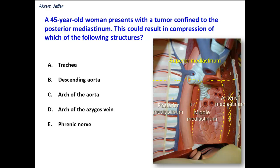These divisions are imaginary and they are for descriptive purposes. In other words, there are no septa or borders between these divisions of the mediastinum. Now let's look at the structures mentioned here that fit into the posterior mediastinum and would likely be compressed by a tumor confined to the posterior mediastinum.